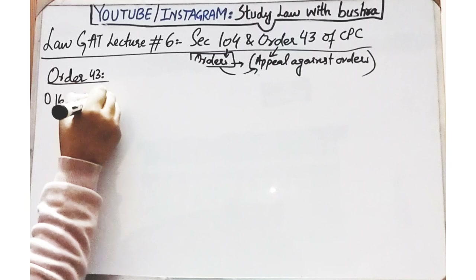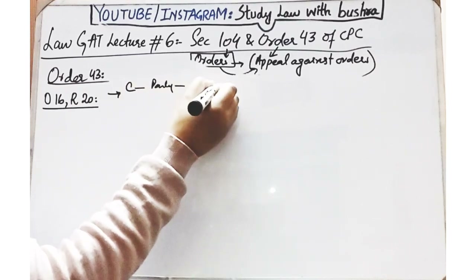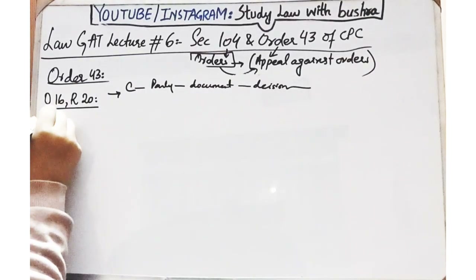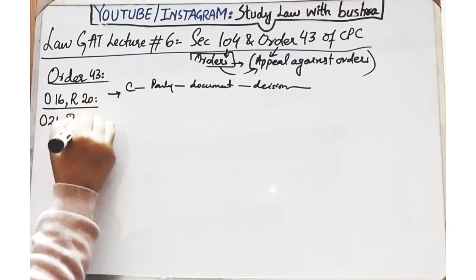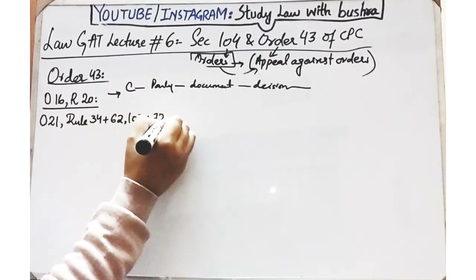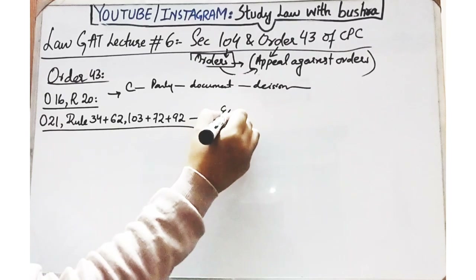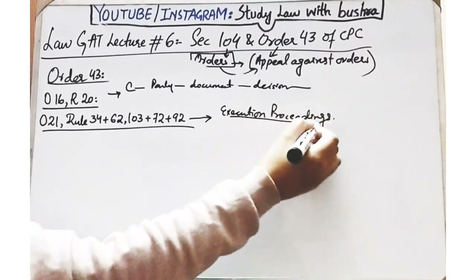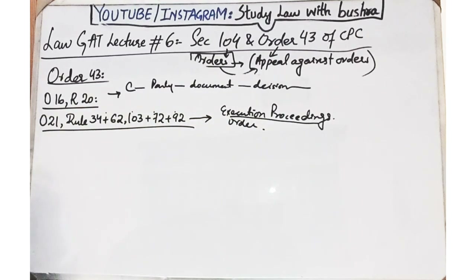Order 16 Rule 20 - pronouncing of the judgment against the party - yani agar kisi case mein kisi party ko court ne koi document produce karne ke liye kaha tha, woh document nahi produce kiya, court ne decision de diya, to woh order bhi appealable hai. Order 21 ke different rules - Rule 34, 62, 103, 72 aur 92. Order 21 basically execution ke saath deal karta hai, aur kaha gaya hai ke agar during the execution proceeding executing court in rules ke andar koi bhi order pass karti hai, to woh order bhi appealable hai.